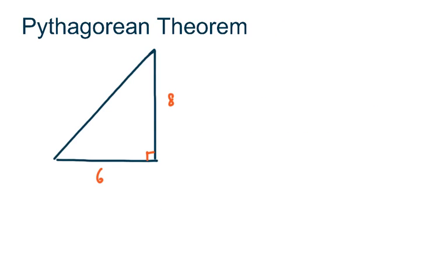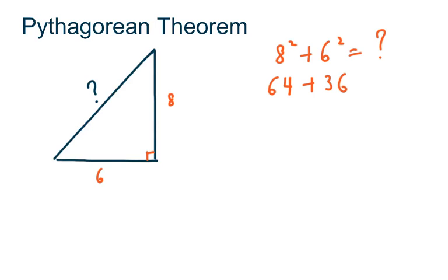Let's say you have a problem and you need to find the length of a side. Most of you have already gone through the Pythagorean theorem in high school. So we take 8 squared plus 6 squared to find the answer. 8 squared is 64, plus 6 squared is 36, which gives us 64 plus 36 equals 100.